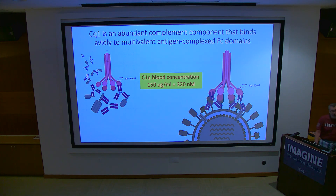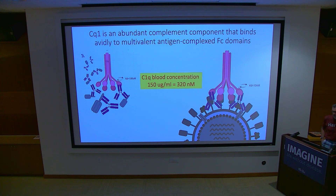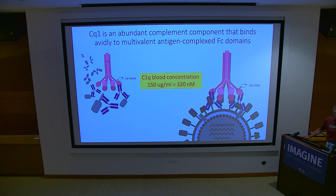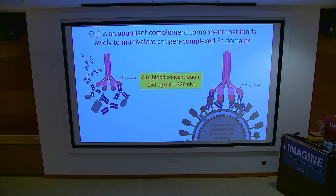Something that we all ignore but Yvonne didn't is C1Q — a complement component, not CQ1 but C1Q. This is an abundant complement component that binds avidly to multivalent antigen-FC domain complexes. The concentration of C1Q in blood is 320 nanomolar. Affinity for individual antibodies is 100 micromolar — that won't work — but arrange them in the right array on a virion and affinity goes to 10 nanomolar. It's never coming off.